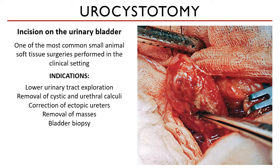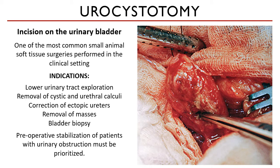Because urinary obstruction is a critical condition, preoperative stabilization must be done before any surgery is conducted. Examples of preoperative management procedures include cautious fluid therapy, correction of electrolyte imbalances, and urinary catheterization.